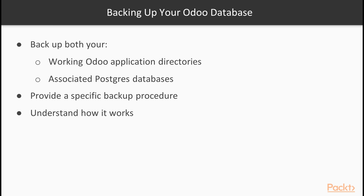It is critical in a production environment that at the minimum you back up both your working Odoo application directories and the associated Postgres databases. If you are running in a hosted Odoo environment where you have been provided a login and password to your database, you will be provided a specific backup procedure. Make sure you fully understand how it works and have a way to test and make sure that it functions as expected.